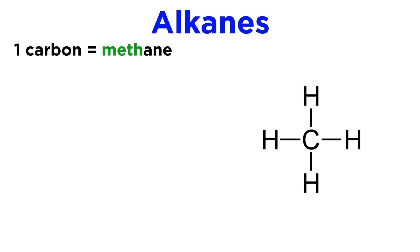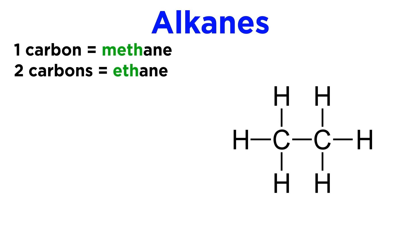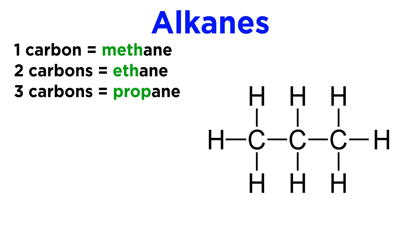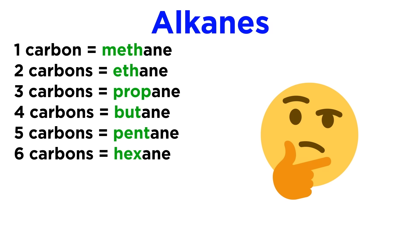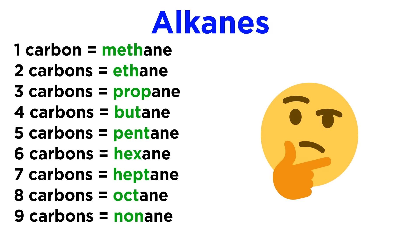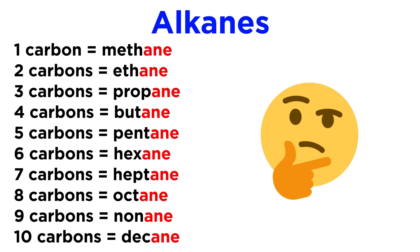The simplest alkane is methane, CH4. With two carbons we get ethane. With three, propane. Then butane, pentane, hexane, heptane, octane, nonane, and decane. These are important prefixes to know, as they tell us the number of carbons in the molecule, while the suffix "-ane" tells us it's an alkane.